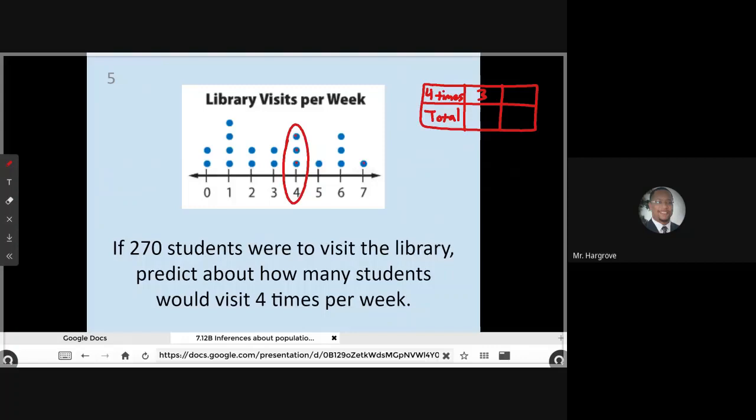So I count one, two, three, four, five, six, seven, eight, nine, ten, eleven, twelve, thirteen, fourteen, fifteen, sixteen, seventeen, eighteen. So there's a total of 18. Now I need to figure out, it says if 270 students were surveyed. So I'm going to put 270 as my total, x there. And then I'm going to do the same thing, cross multiply, solve for x.